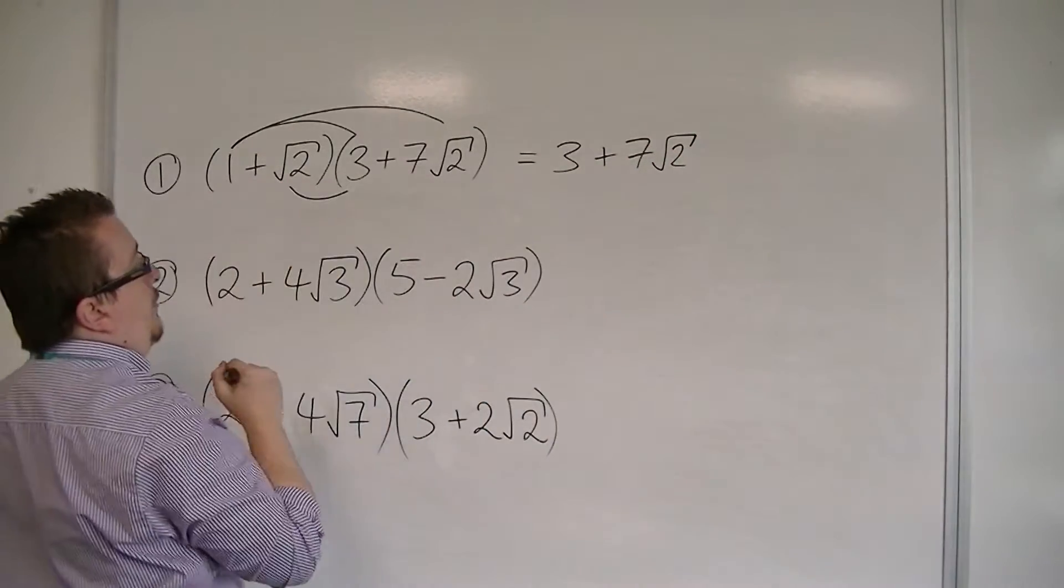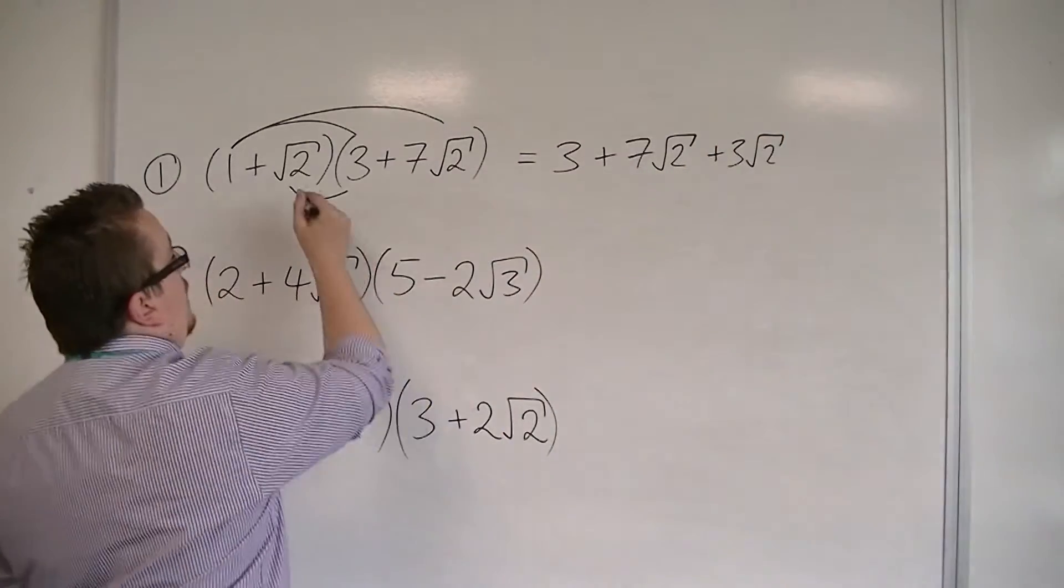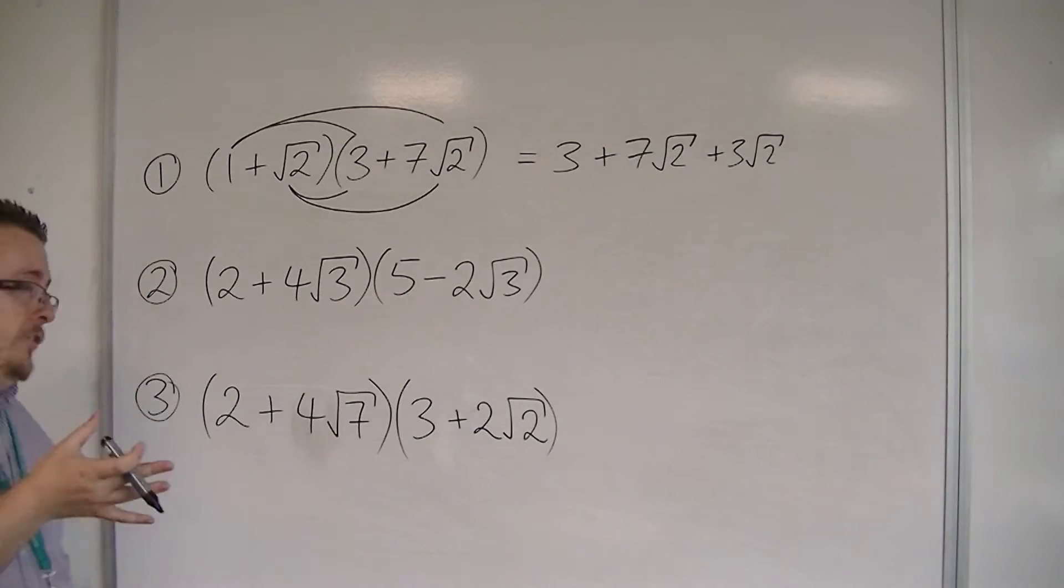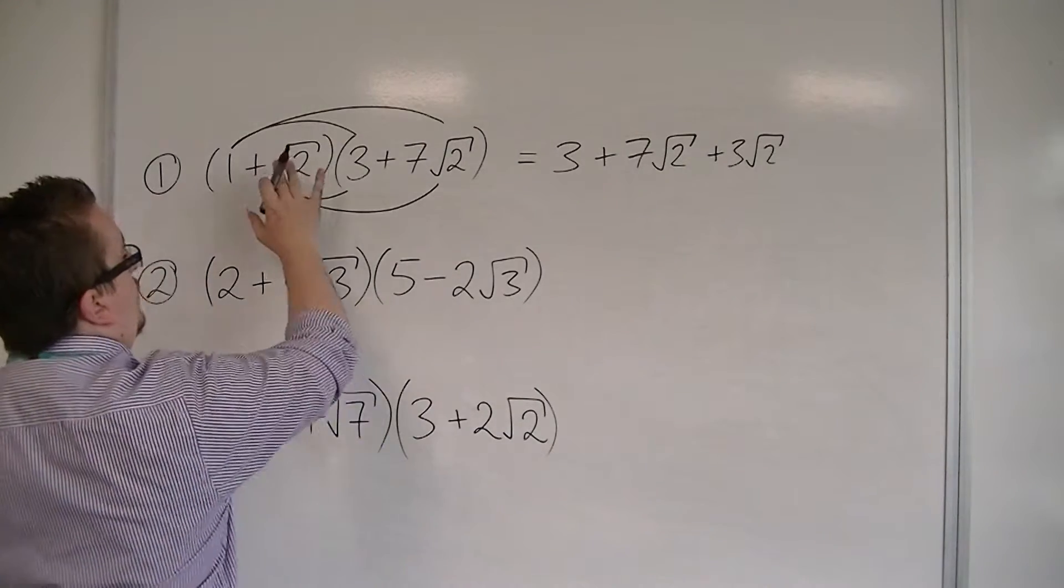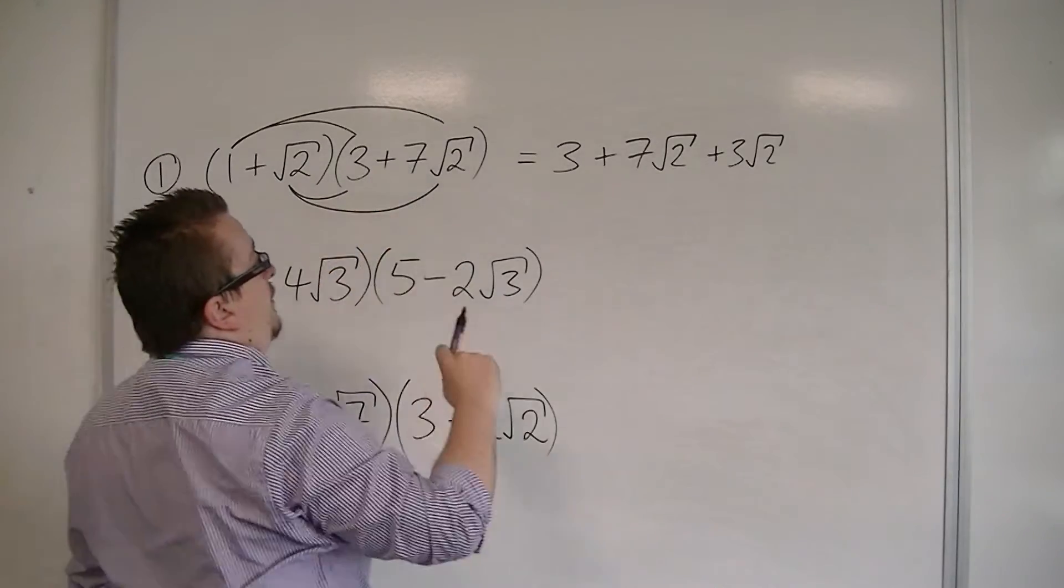Then I've got √2 times 3, so that's 3√2. And then I've got √2 times 7√2, a little bit more difficult to think about. I've got √2 times √2, which I know is 2. So I've got 7 times 2, which is 14.